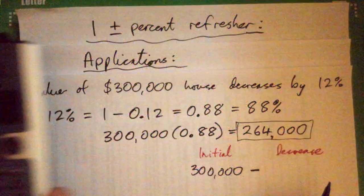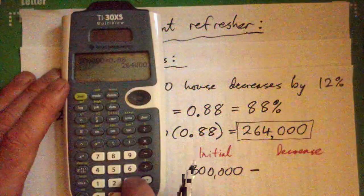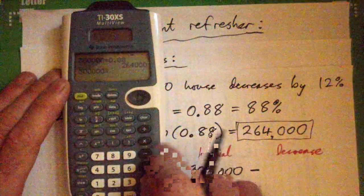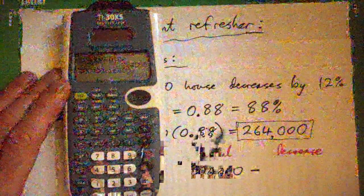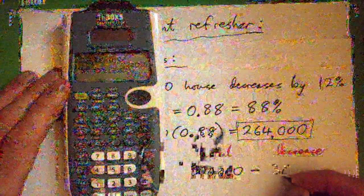In fact, we didn't figure that out because, look. 300,000 minus 264,000 is 36,000. So, it actually decreased by 36,000.